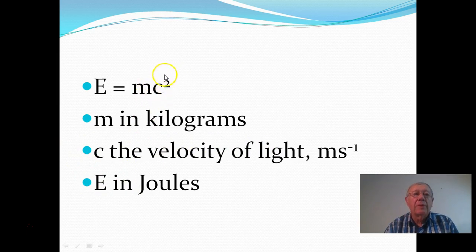Now, if we think about the size of this figure here, three by 10 to the eighth, and the squaring, we're squaring that number, we get a massive number of joules of energy. And this is where the energy from the stars and the sun comes from, from the conversion of mass into energy.